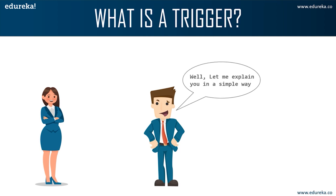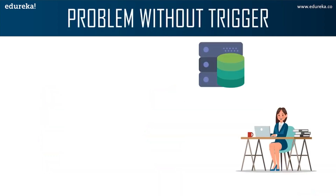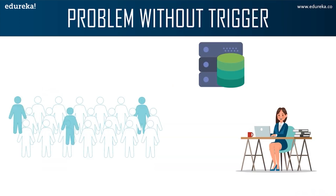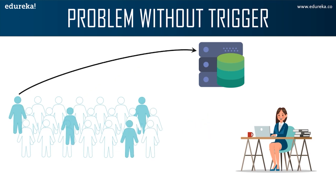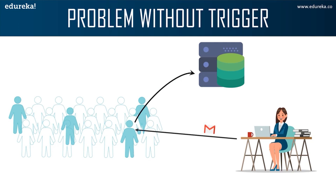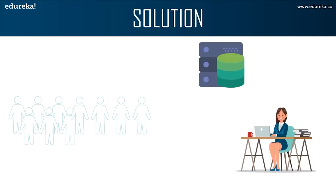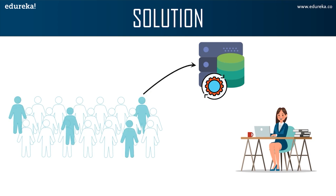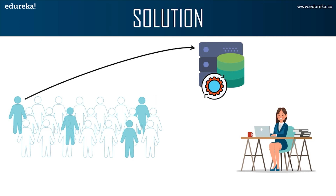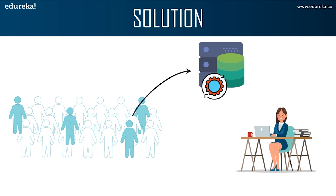Anna is a marketing officer in a company. When new customer data is entered into the company's database, she has to send a welcome email to each and every new customer. If it's one or two customers, Anna can do it manually, but what if the count is more than a thousand? It will be a repetitive and tiring job. In such a scenario, triggers come in handy — Anna can easily create a trigger which will automatically send a welcome email to new customers once the data is entered into the database, without having to monitor it frequently.